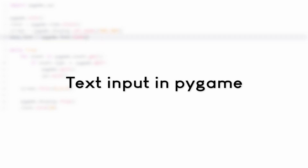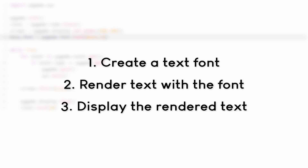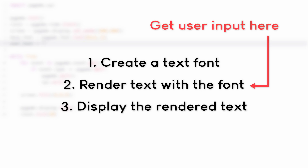Before we get into actual code, let's talk about the logic of getting text input. There are three major steps. The first step is to get a font. The second step is to use that font to render text on a new surface. The final step is to use that new surface and put it on the main surface the user sees. We follow this logic, but with one addition: when rendering text, we get input from the user via the event loop. Whenever the user types something, we capture it in a string and render that string.